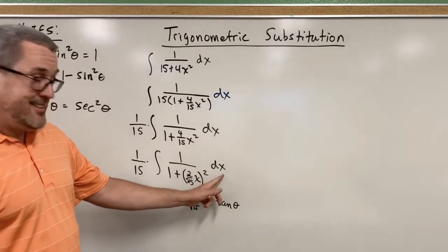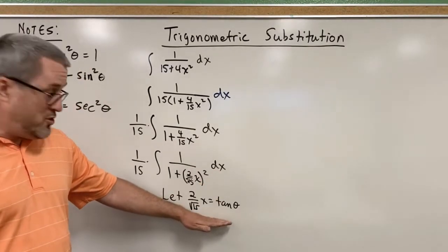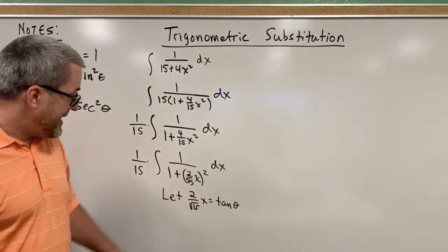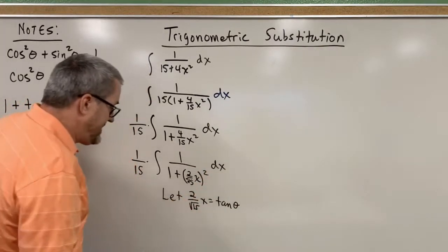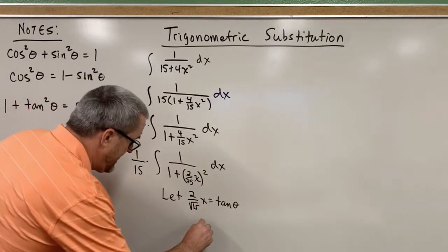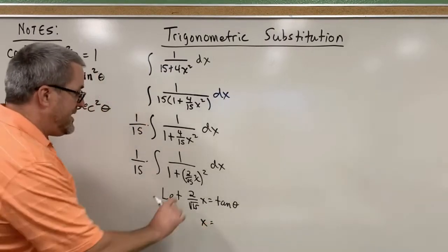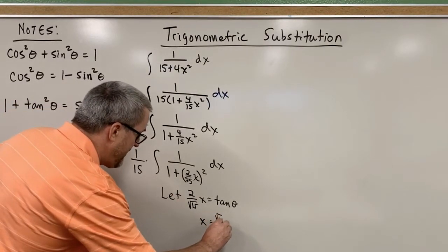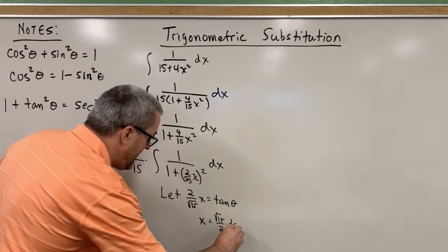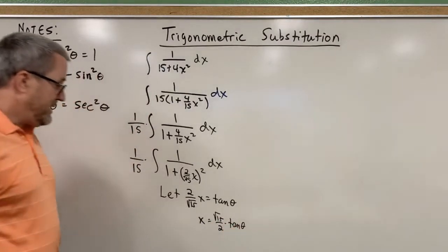But we do have some consequences, and the consequences are this. We need a dx. So given that this is our new statement, our new identity, we're now going to have to figure out what dx is. So let's first say x is equal to, if we multiply both sides by the square root of 15 over 2, x will equal that.